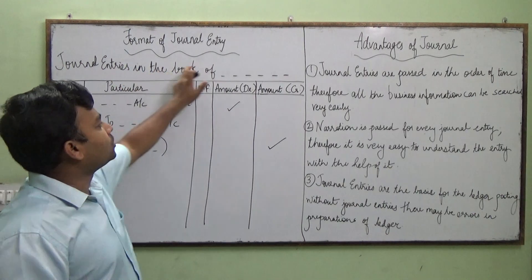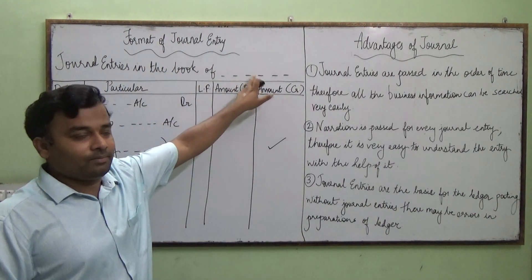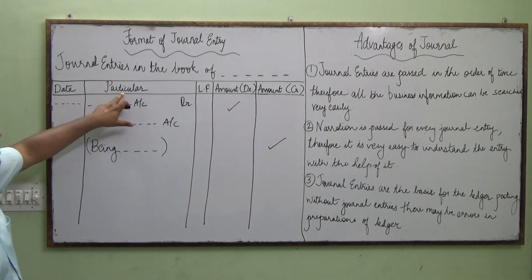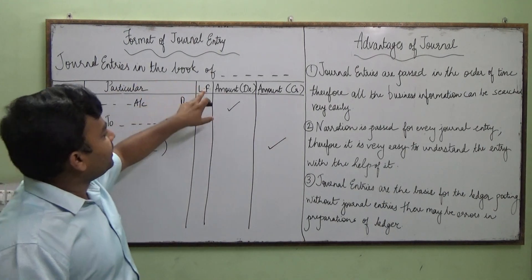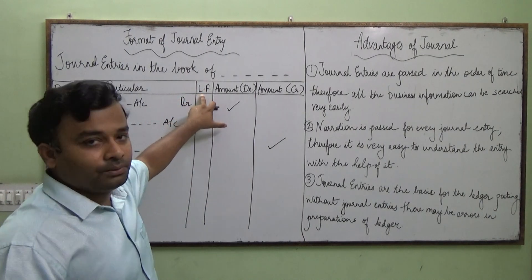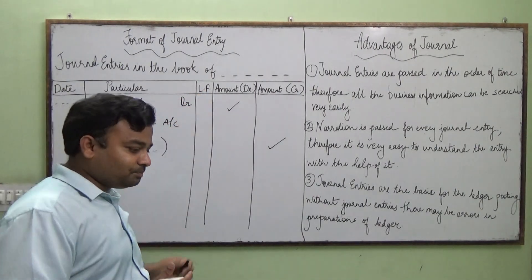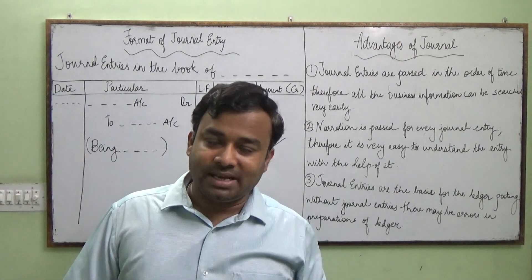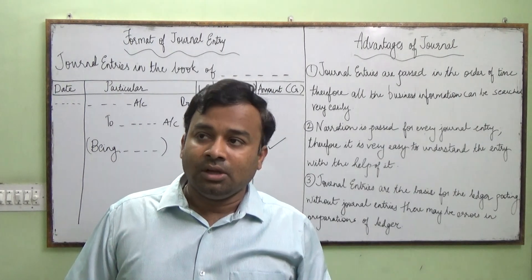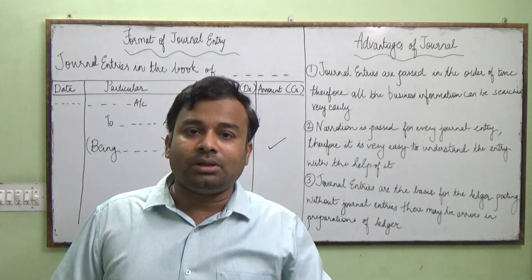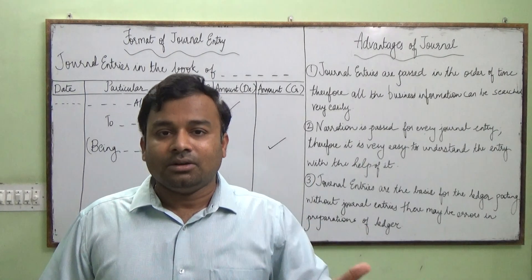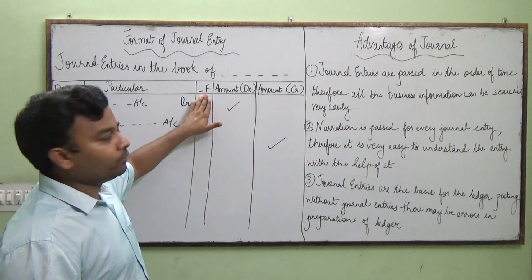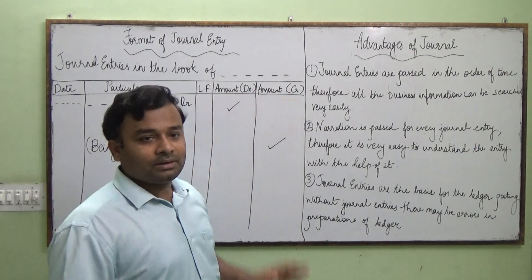You will find journal entry in the books of a company — for example, Reliance Industry. The first column is Date. The second column is Particulars. Then there is Ledger Folio, also called L.F. The second step of accounting is classification, which we call the ledger. Then there are two amount columns: Amount Debit and Amount Credit.